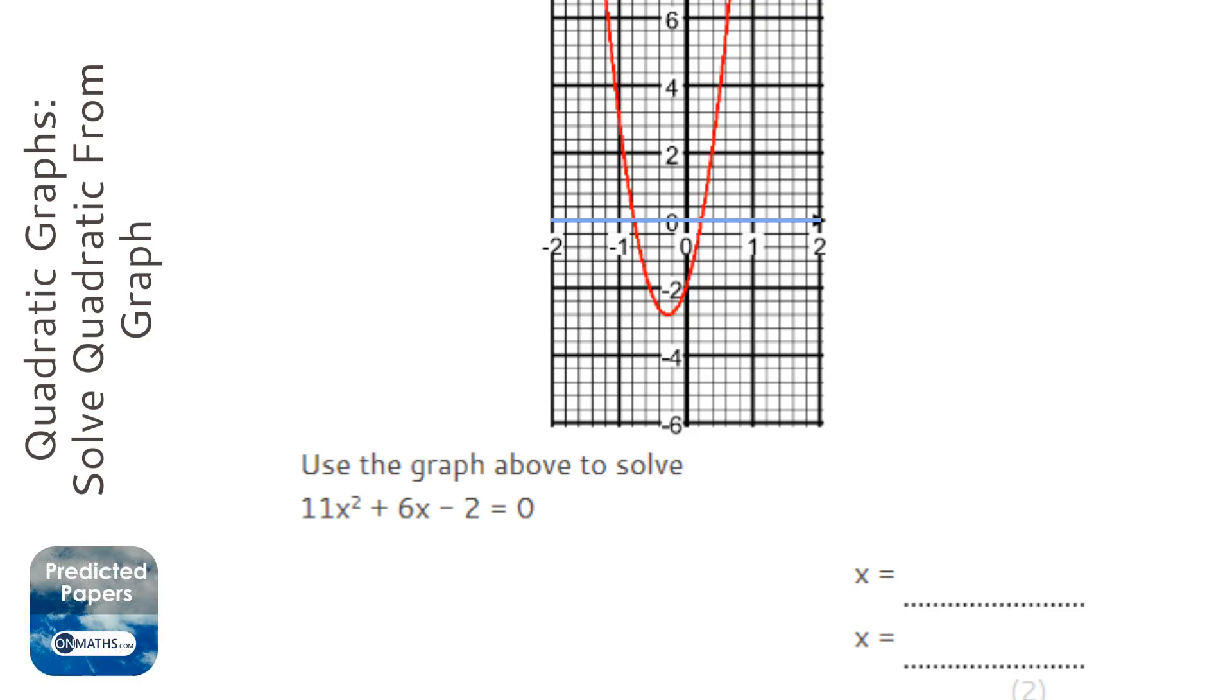Now we can't really get it too precise, but it's this point here and this point here, which just by looking at it looks roughly 0.2, and just be careful because each of those little squares is 0.2, it's a fifth, because there's five squares to get to one.